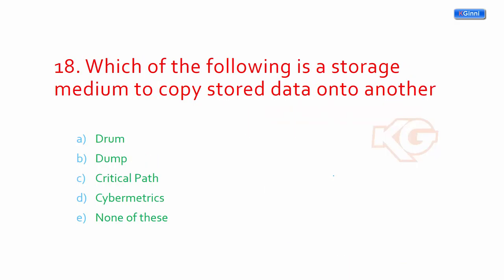Which of the following is a storage medium to copy stored data into another? What kind of information is that? Is it a drum? I never heard of that, so this cannot be it. Critical path or cyber matrix - these are far away. So the actual answer should be dump. If you're a database guy, you might have already worked with dump files like exporting a data table into a dump file.